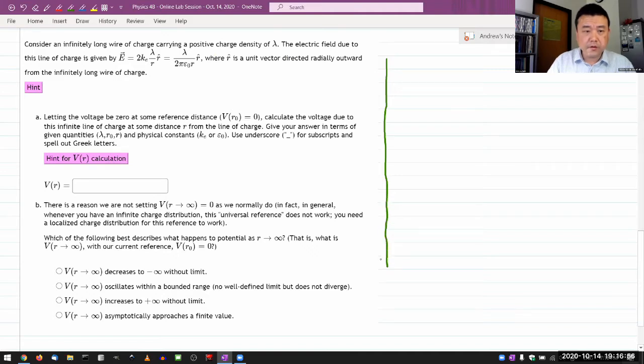So I have my infinitely long wire and it has charge density lambda. The electric, oh, it is telling me the electric field, good. So I also know what the electric fields look like. So I'm drawing the side view. So the electric fields look like they're going away from this line perpendicular.